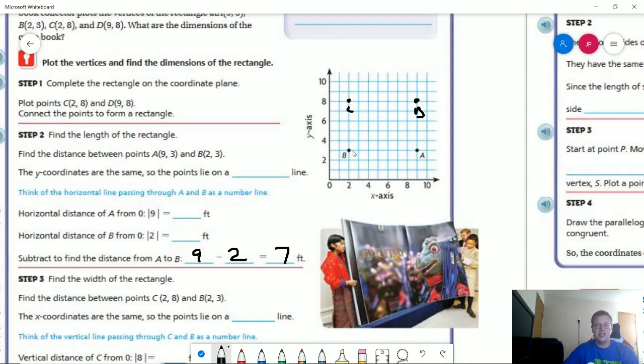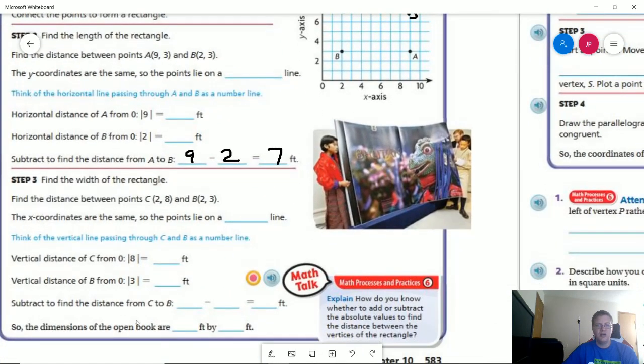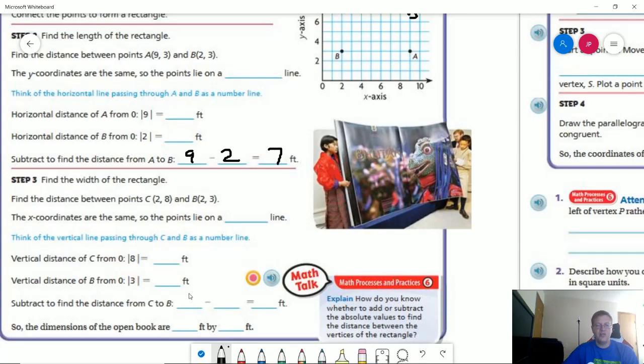And then from point C to point B, we are doing the same thing, except we are starting with the absolute value of 8 and the absolute value of 3. So 8 minus 3 is going to give us 5 feet. That means the dimensions would be 7 feet by 5 feet.